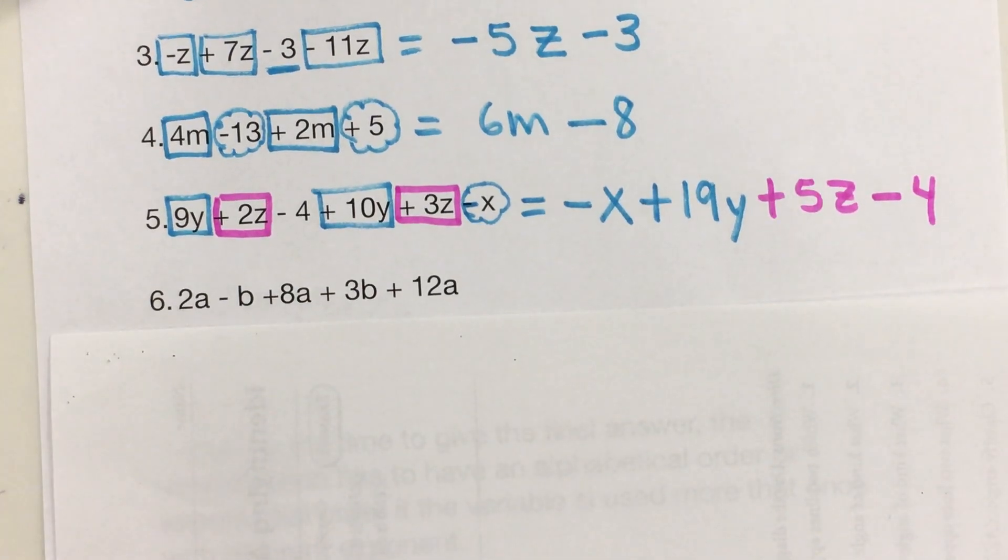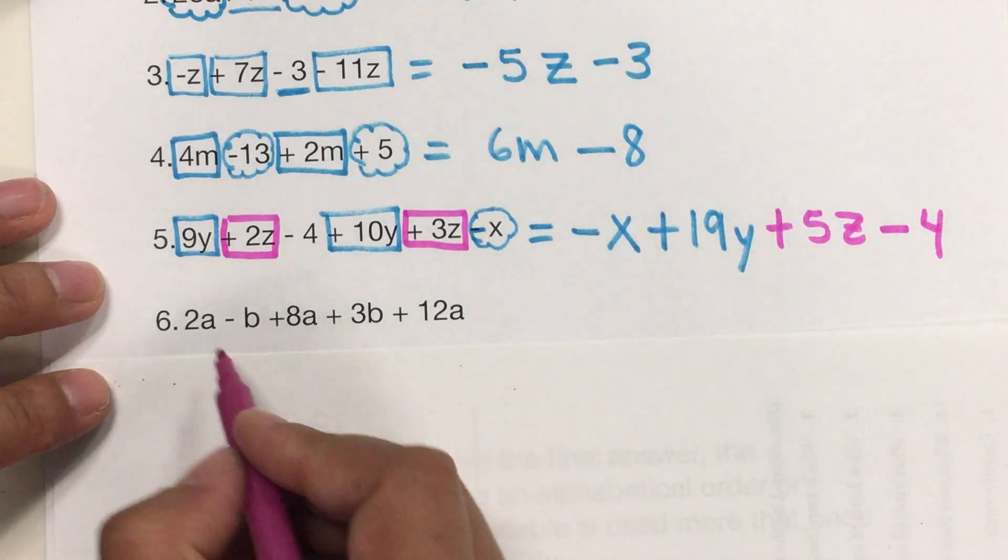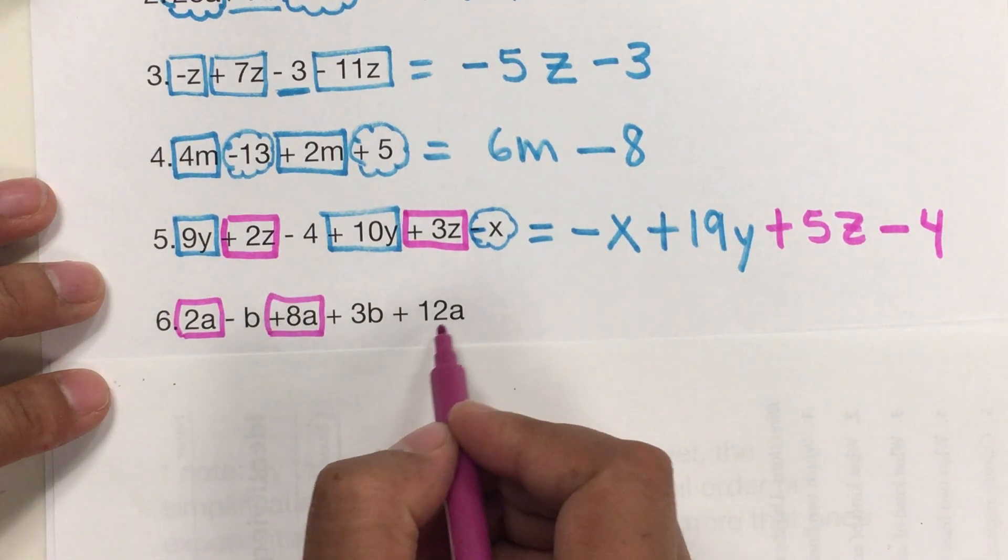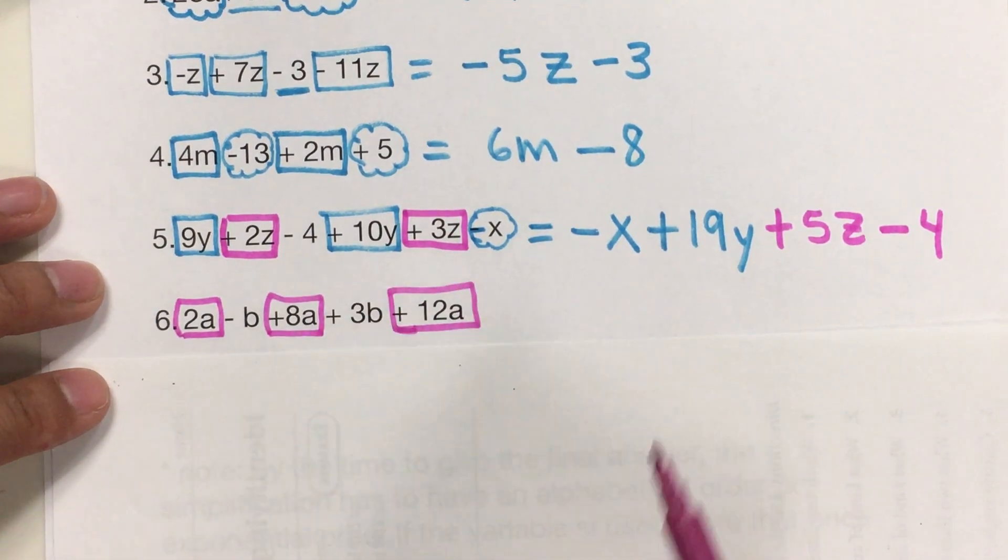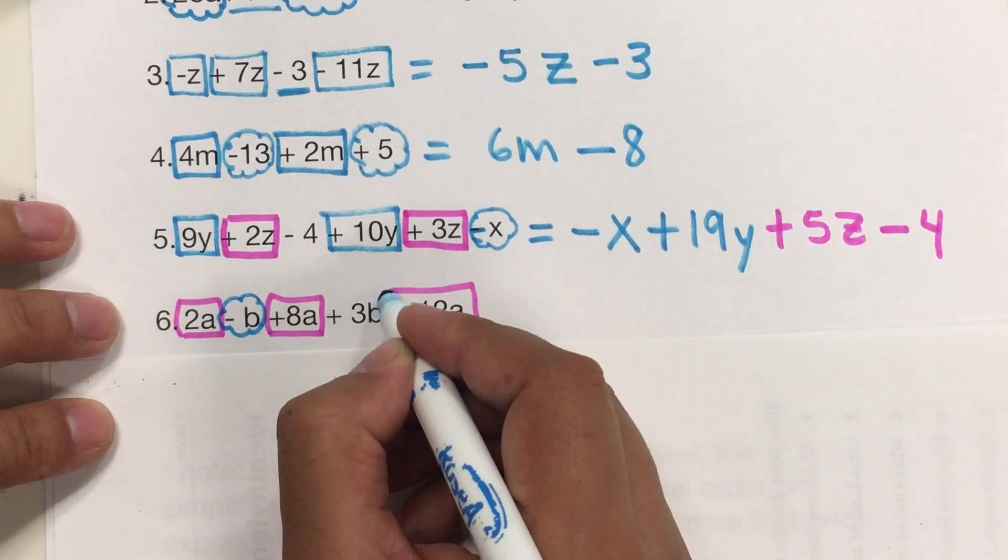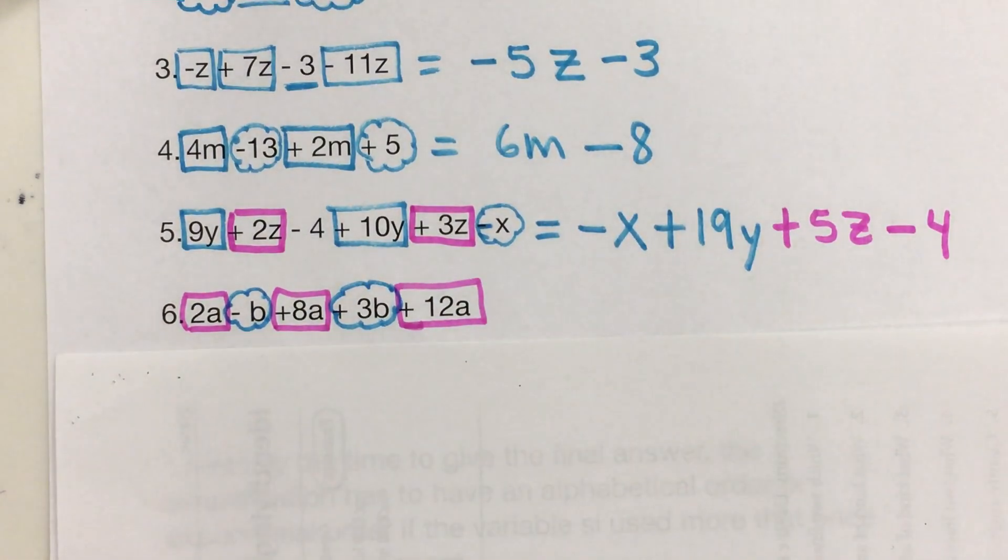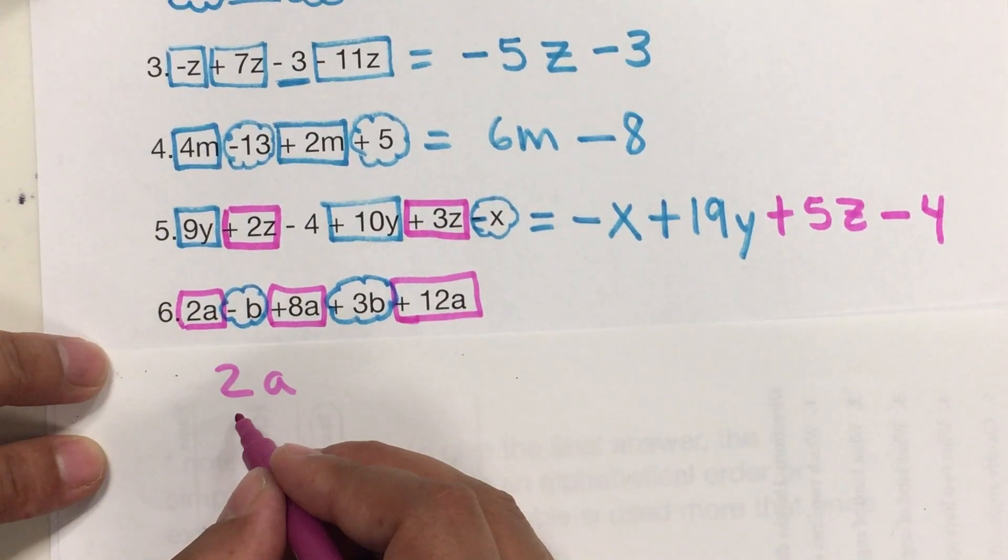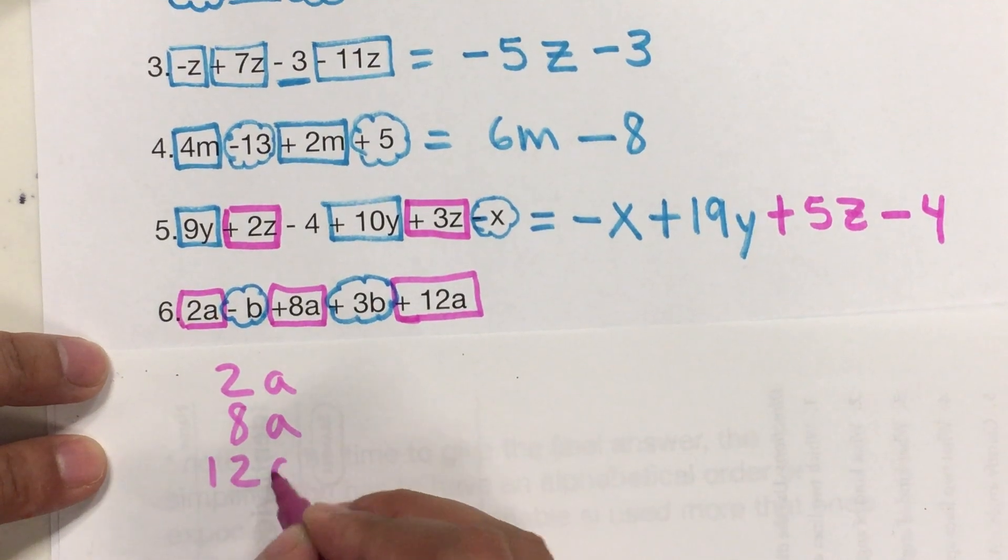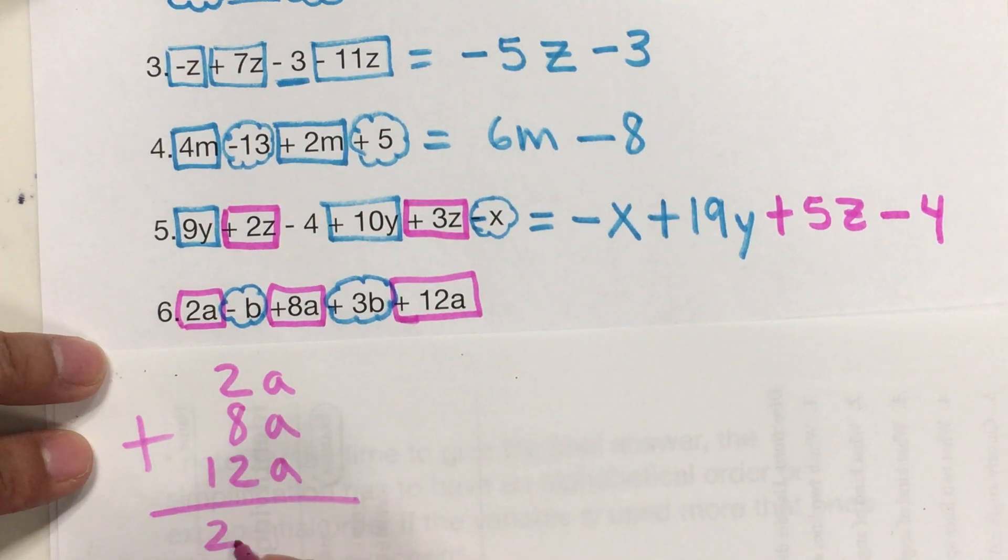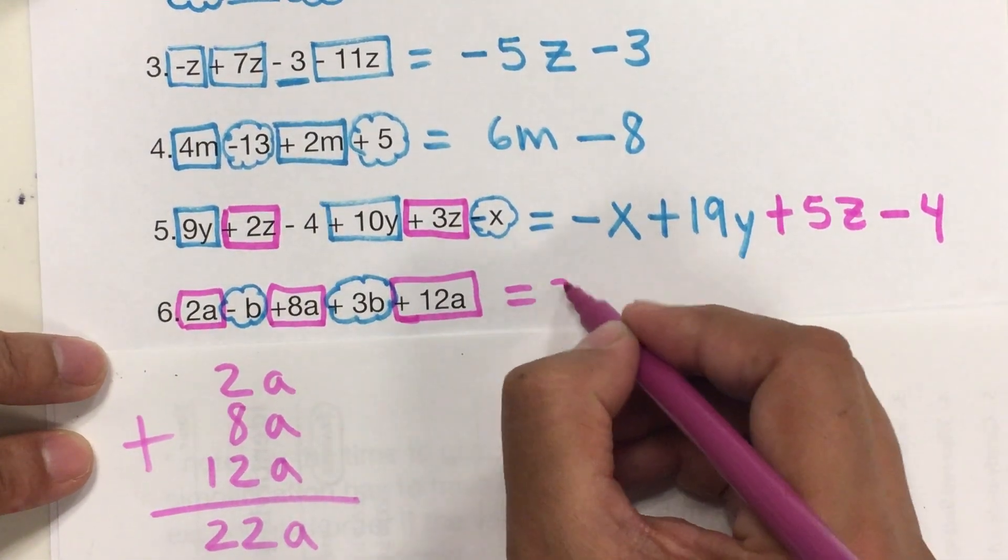Now, the last one. In here, I have A. Another A. And another A. So, I have 3 with A. And I have B and B. So, in alphabetical order, I will put this together first. Since they are all positive for the A's, I'm just going to add them. So, 2A, 8A, and 12A. All together make 12 plus 8 is 20. Plus 2 is 22A. 22A.